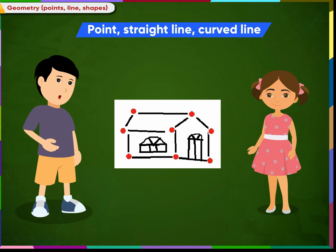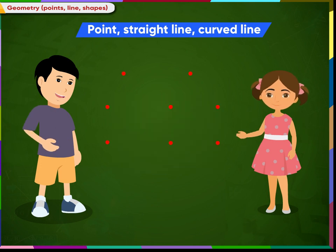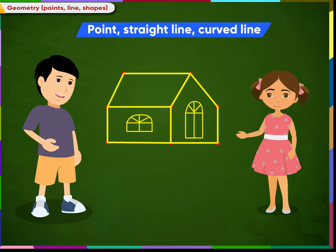Shreya, can you now draw the house using straight lines and curved lines? Yes, Siddharth, sure. I draw these points. Then join them to draw straight lines. Here, I draw a curved line to draw the windows and doors. And that's it.